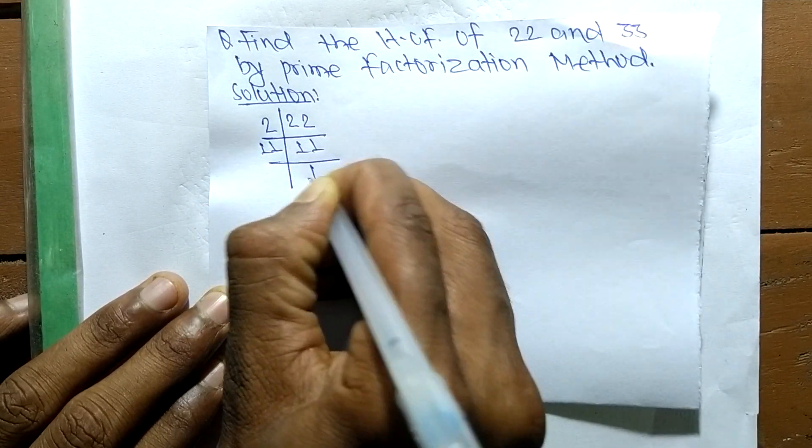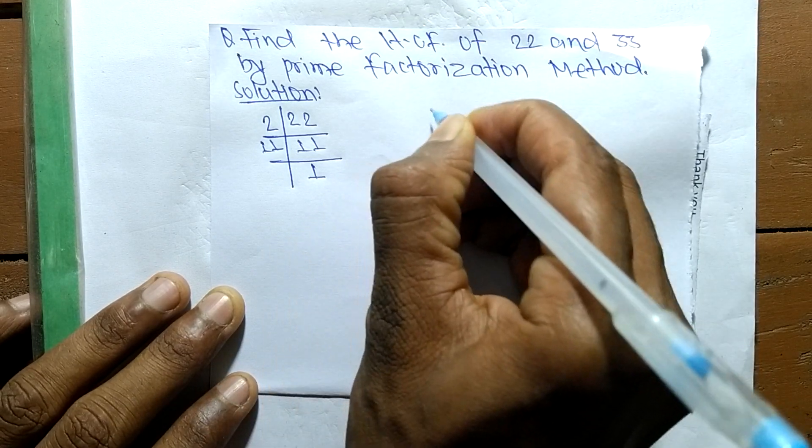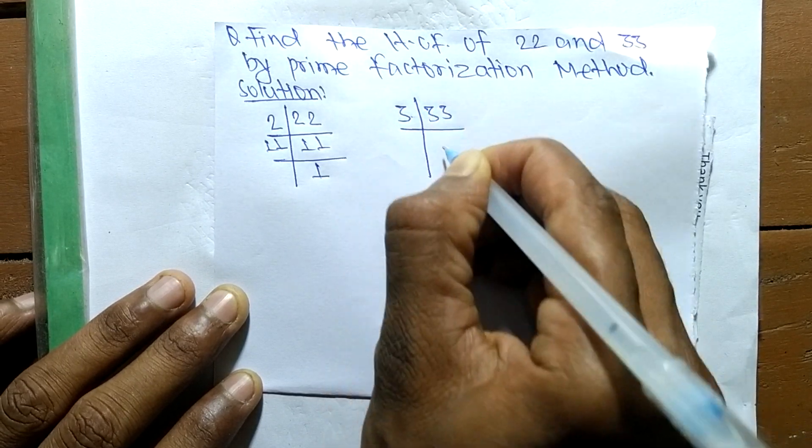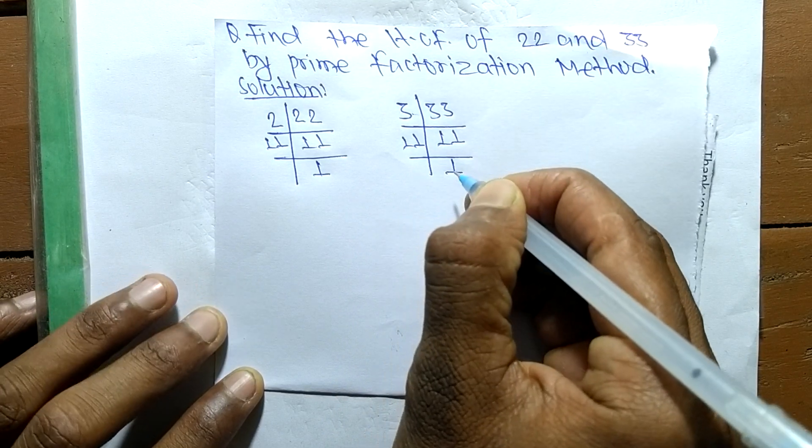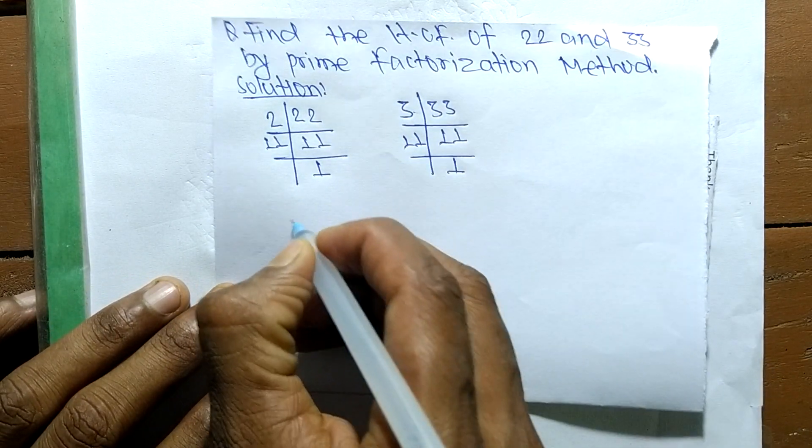And 11 times 1 means it is 11. Like this, the prime factors of 33 are 3 times 11 means 33, and 11 times 1 means it is 11.